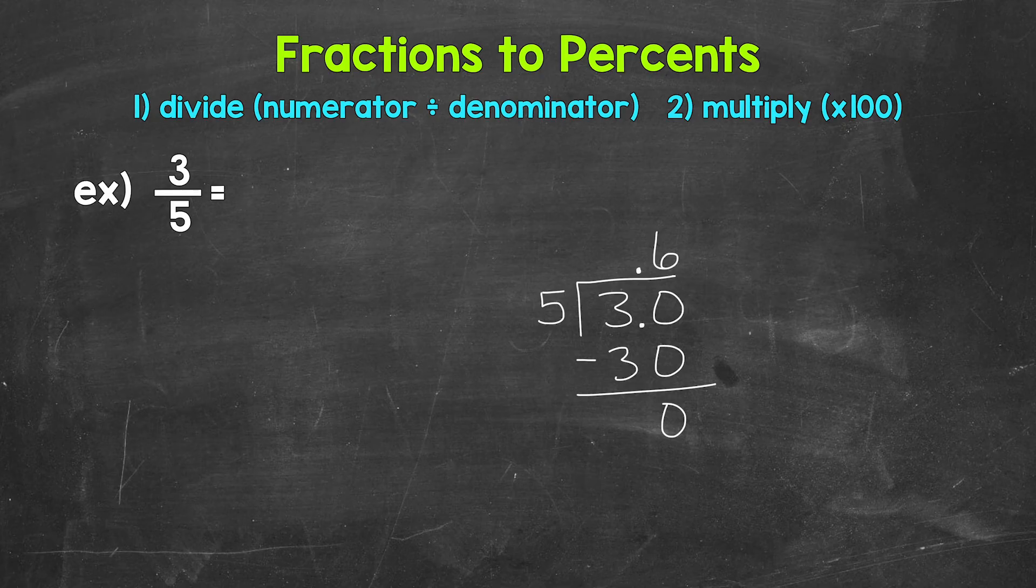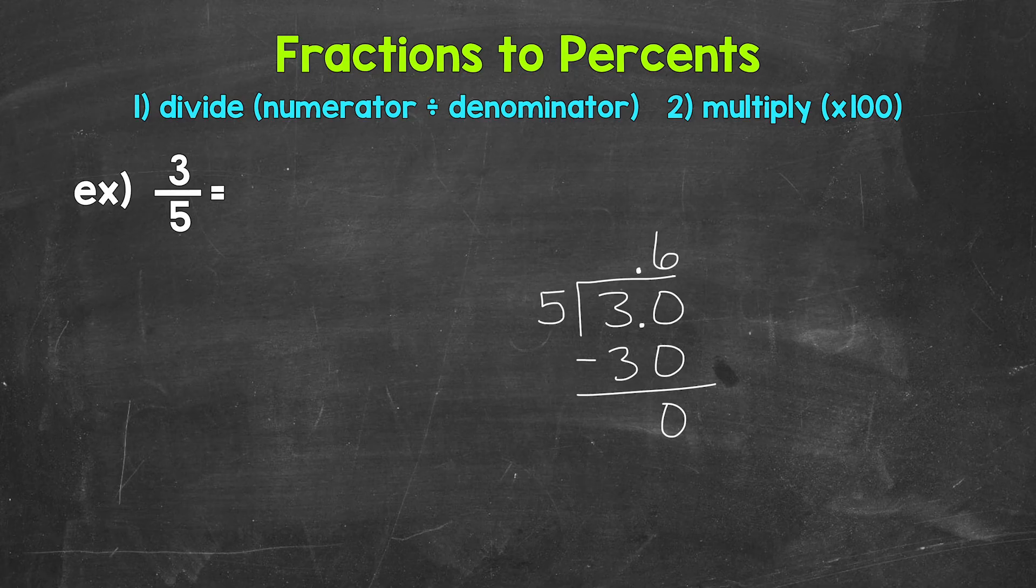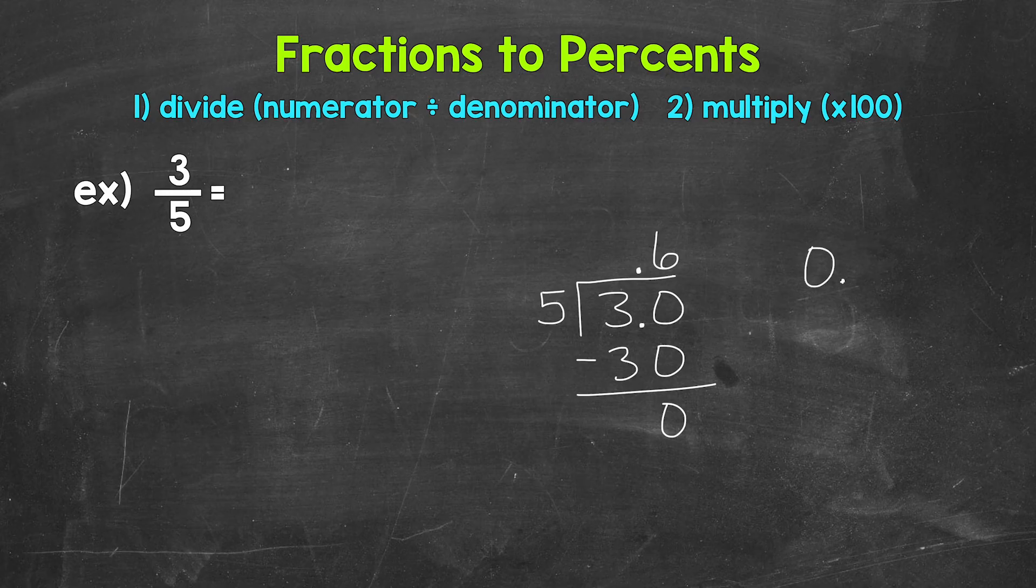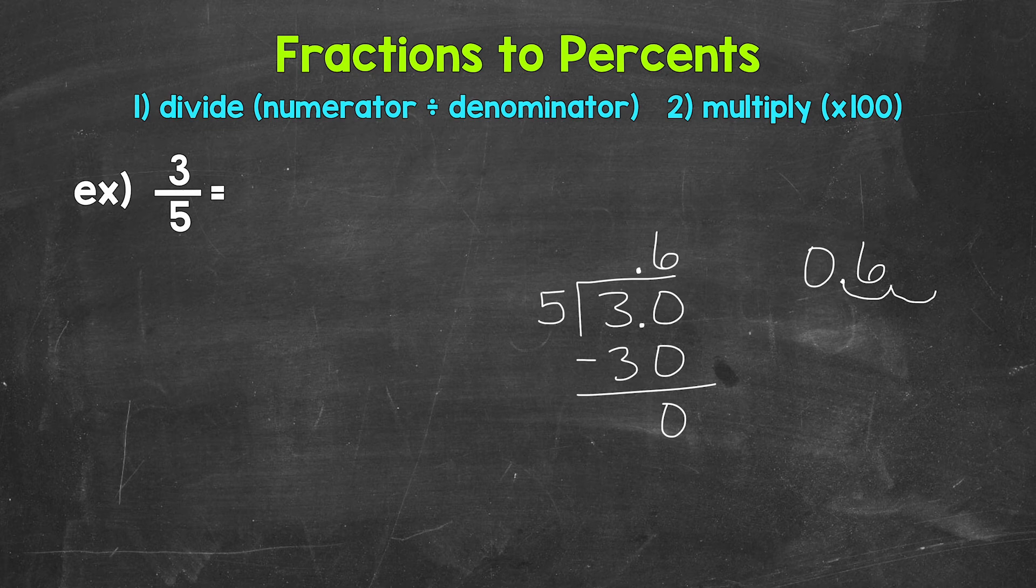3 fifths equals 6 tenths. Now we need to convert this decimal to a percent by multiplying it by 100. And again, we can do this by moving the decimal twice to the right. So let's rewrite 6 tenths off to the side here and move the decimal once, twice to the right.